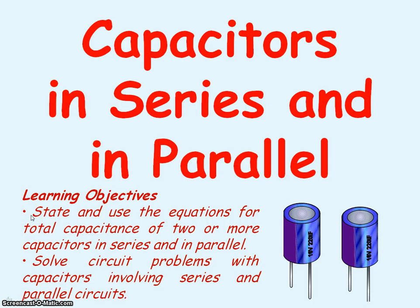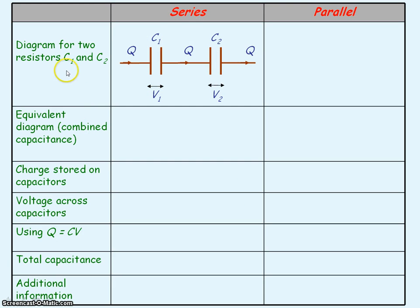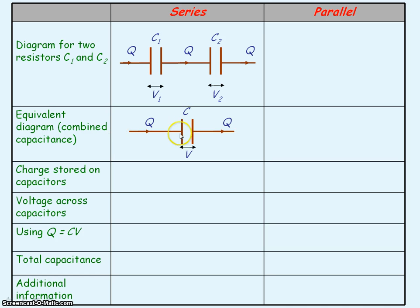I'm going to be looking at capacitors in series and in parallel. If we first consider two capacitors, C1 and C2, connected in series, C1 will have a voltage V1 across it, and C2 will have a voltage V2 across it. If we were to combine these two capacitors, we would get an equivalent capacitor of C, which would have a voltage V across it.